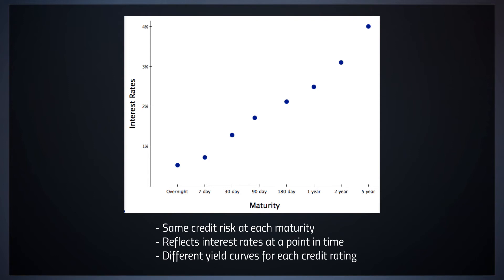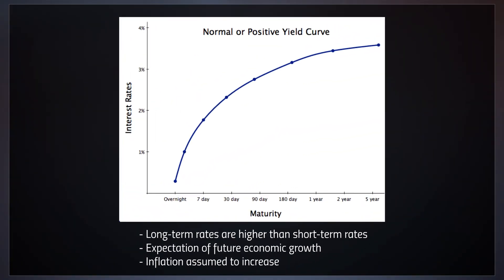Let's take a look at some typical examples of overall yield curves. We have our normal or positive yield curve, in which long-term rates are higher than short-term rates. This reflects an expectation that there's going to be good, or at least positive, economic growth in the future, and there's going to be some inflation that will need to be compensated for — which is part of that increasing return over time to get a real return on our lending.